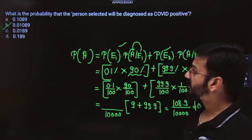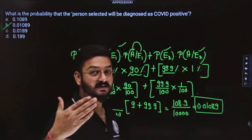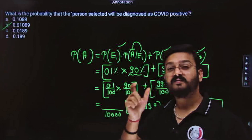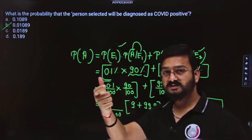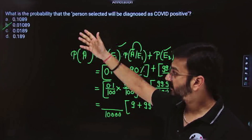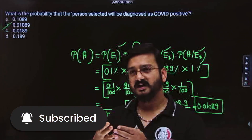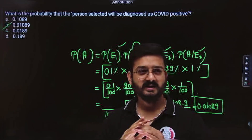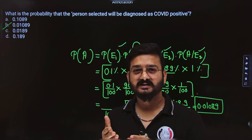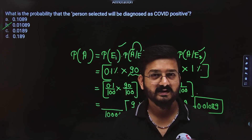I hope you understand how to define the events, then how to find the conditional probability, then use Bayes theorem for reverse probability — numerator is favorable, denominator is total. This same denominator you can use in the previous part. We will meet in the next session with a few more case studies on probability. After that, I will start with the case studies of Maxima and Minima. Take care of your health and study well.